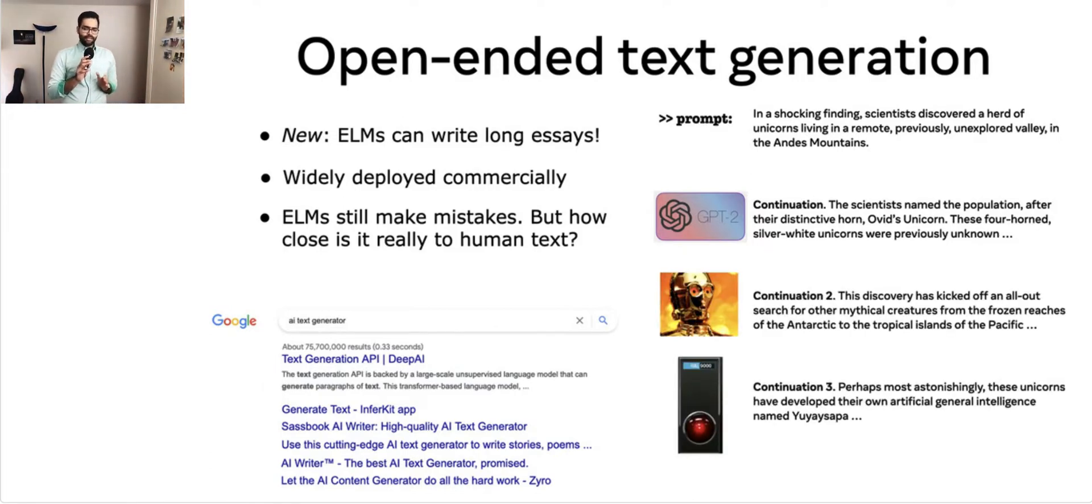What makes this question hard to answer is that there are multiple correct and equally valid continuations possible for any given prompt. For instance, looking at this example on the right, there's no reason to prefer GPT-2's continuation over the other two. In this work, we give a statistical diagnostic tool which can quantify how close the text generated by a model is to human written text.